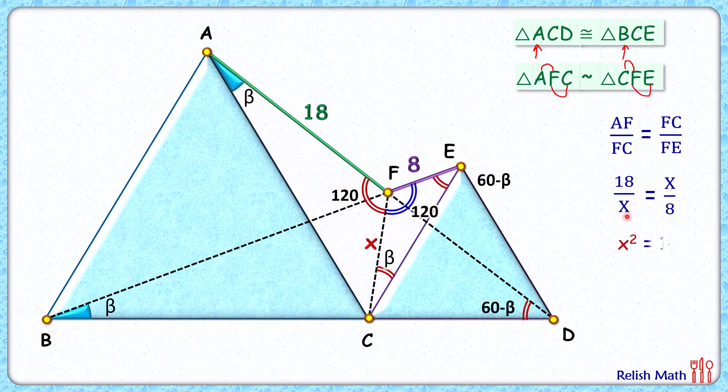Solving it by cross-multiplying, we get x squared equals 144, so x is 12 cm, and that's our answer.